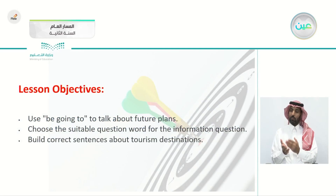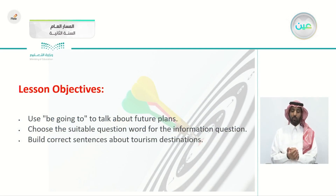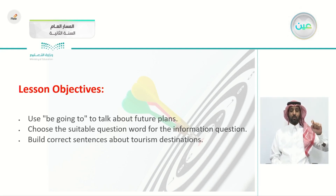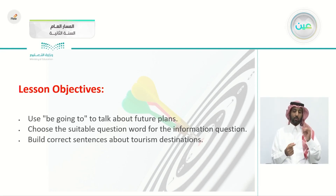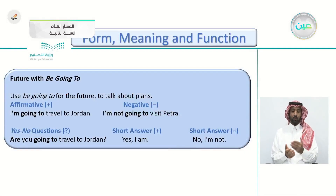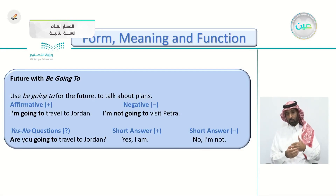So these are today's objectives. We will be using 'be going to' to talk about future plans, choosing the suitable question word for information questions, and building correct sentences about tourism destinations. Let's begin with the grammar function — future with 'be going to.'